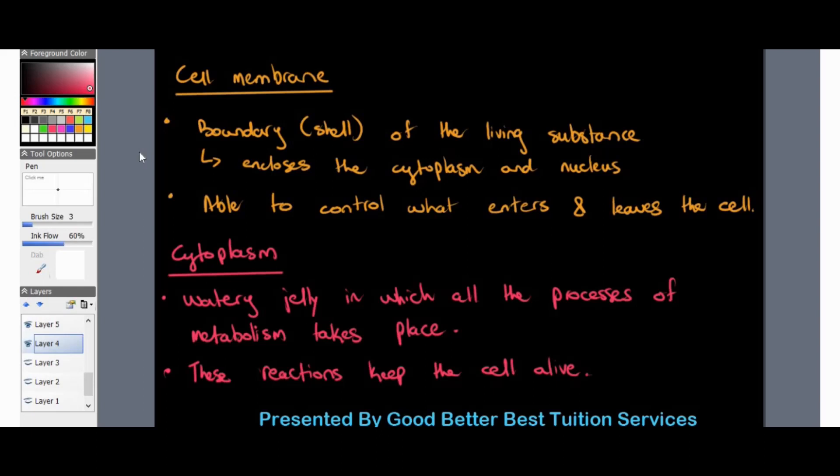The cell membrane is also able to control what enters and leaves the cell. Cells feed on different things — just as we, plants, and animals feed by eating food, cells also feed. They take in substances and also allow particles to leave the cell, which is essentially what the cell membrane does.